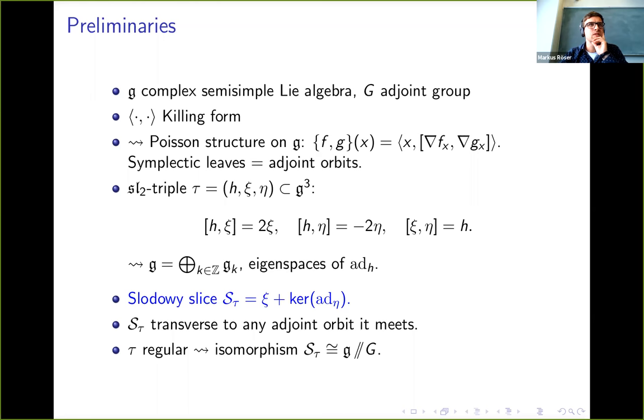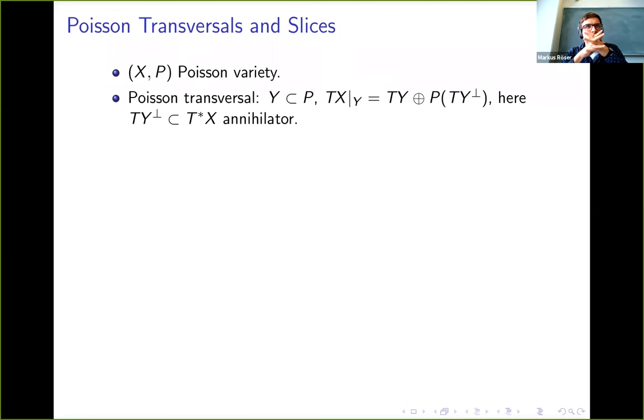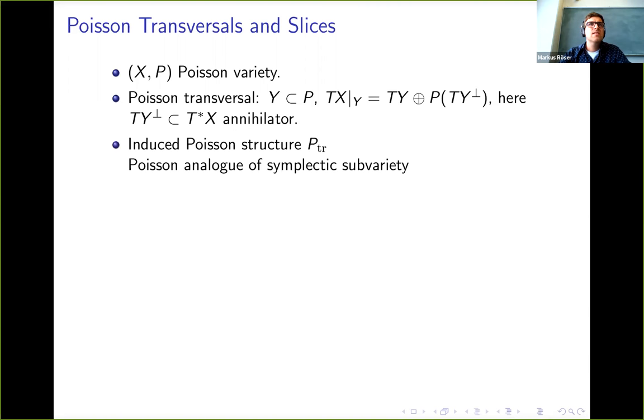Let me remind you what that is. If we start with a Poisson variety (X, P), a Poisson transversal is a subvariety Y such that the tangent bundle of X along or restricted to Y decomposes into the tangent bundle of Y plus the image of the annihilator of the tangent bundle of Y under the Poisson tensor. Here we think of P as a map from T*X to TX.